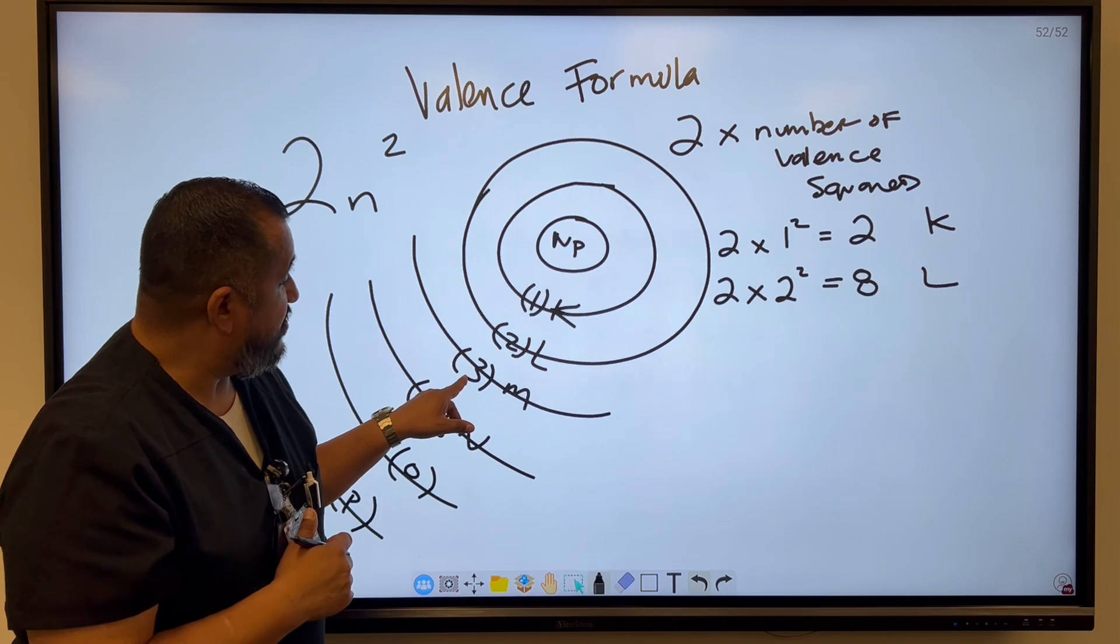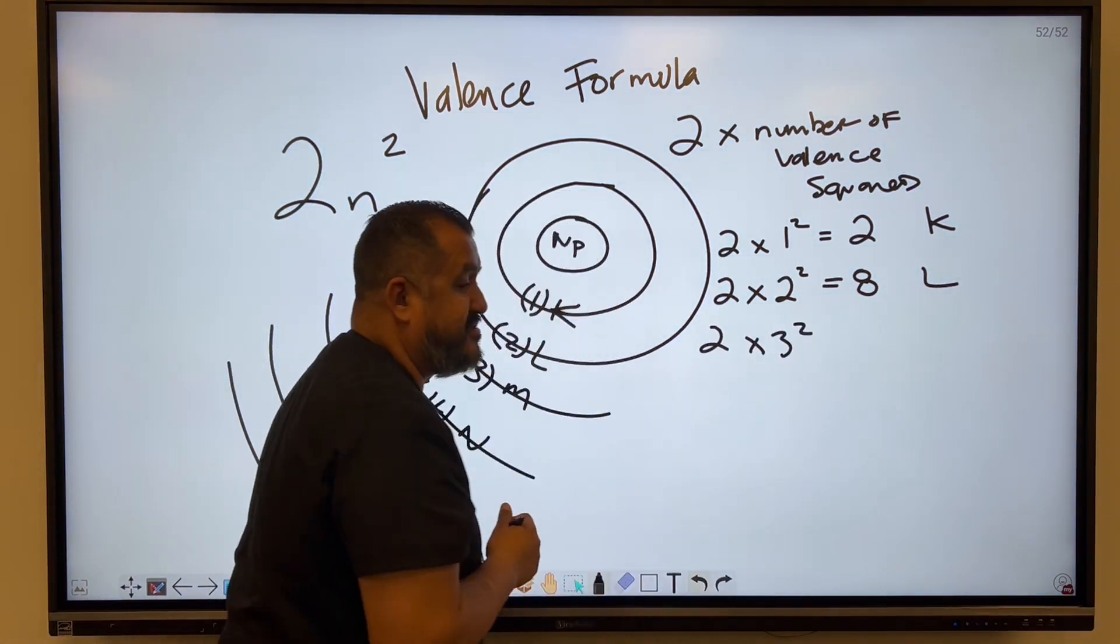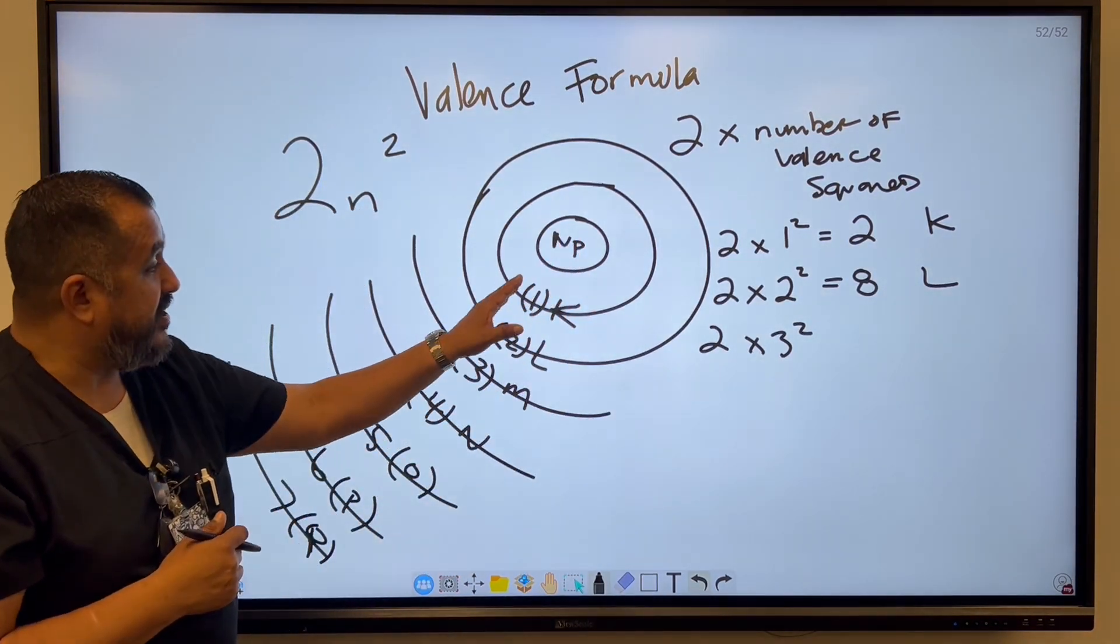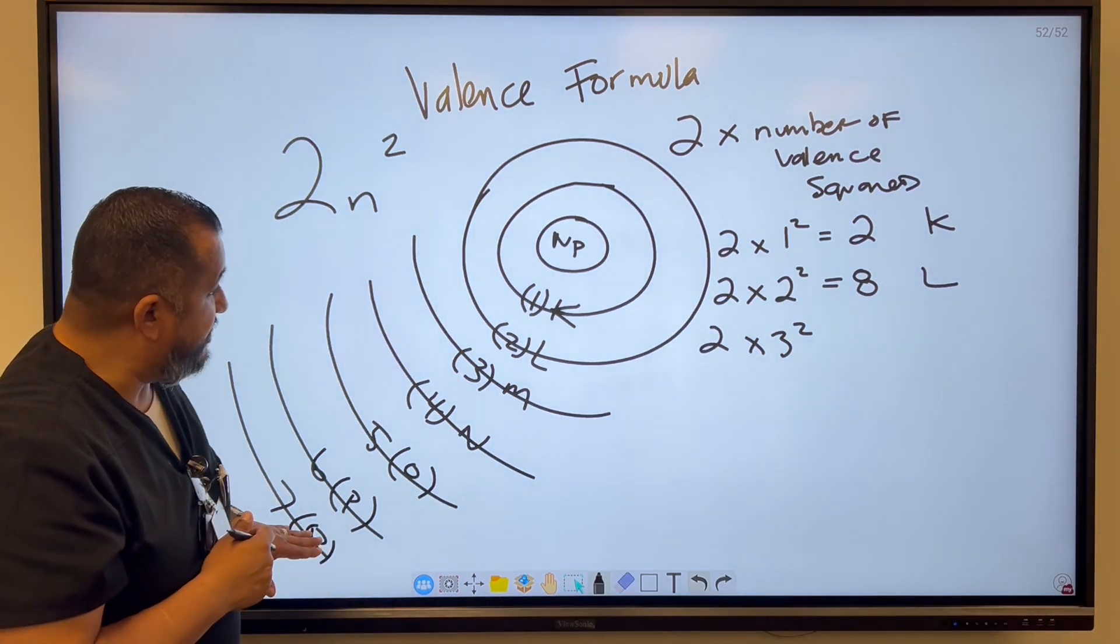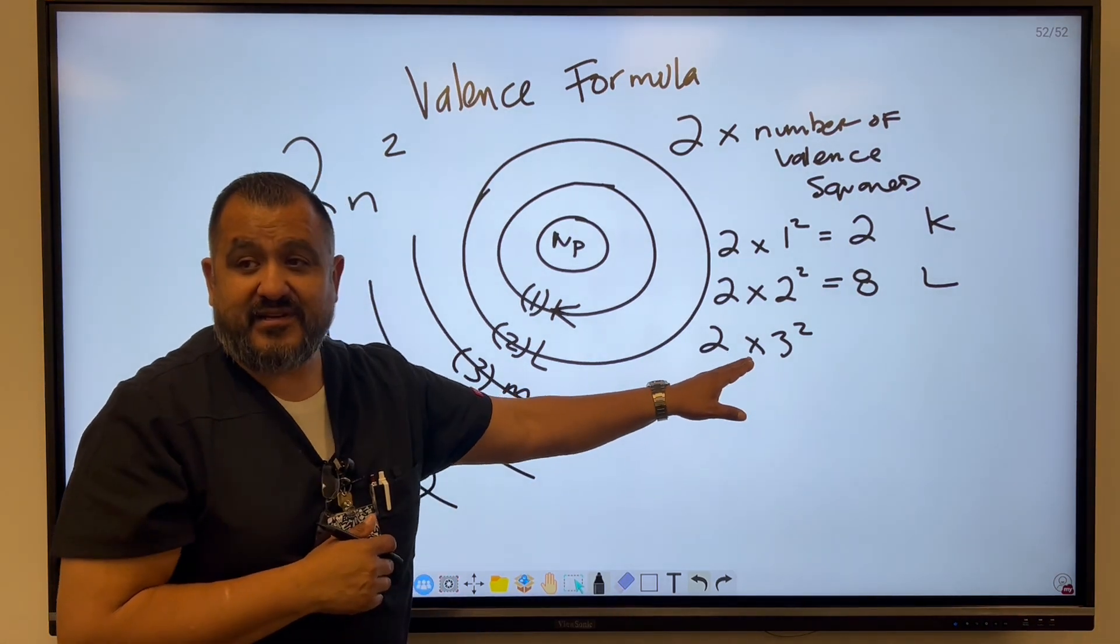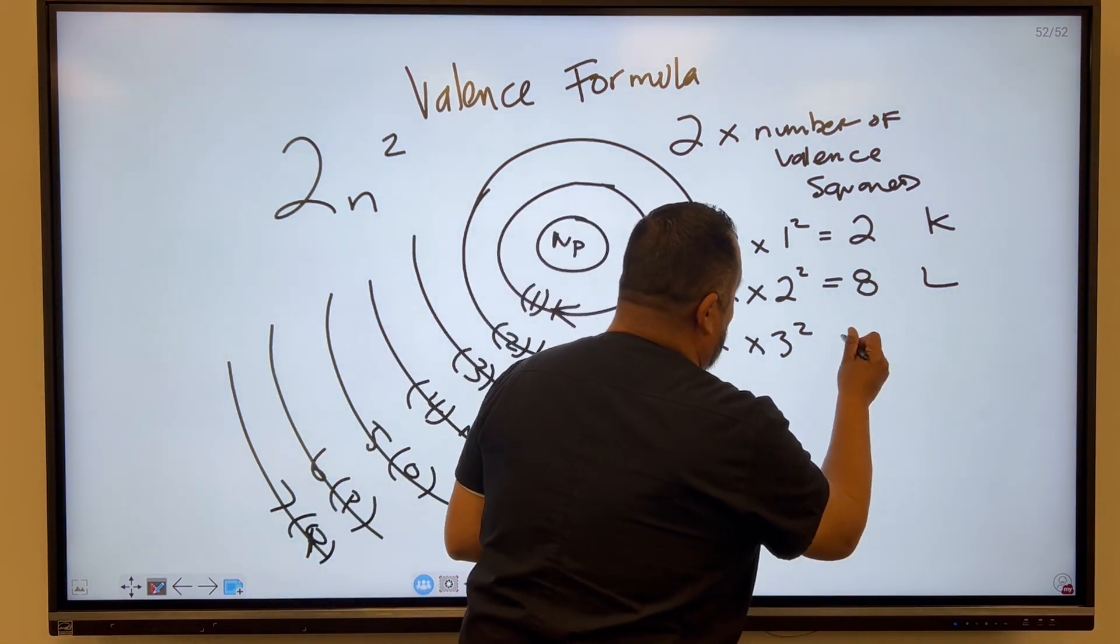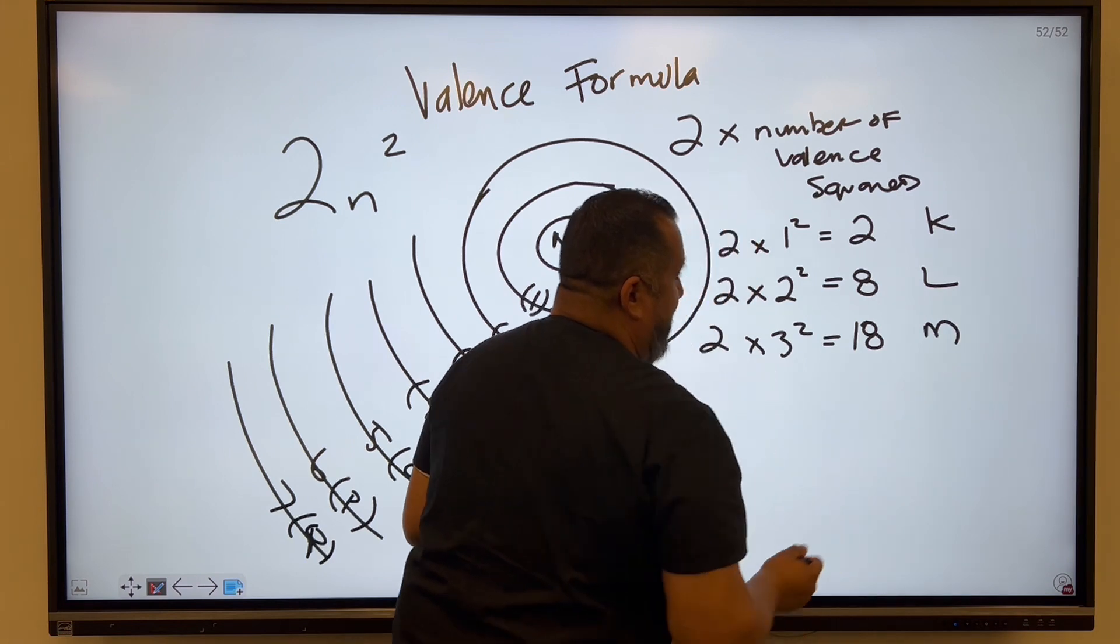Let's go to the third energy level. You're going to have 2 times 3 squared. Again, the number of the valence squared. If you just know K is the first one and 7 is Q, that's going to be the seventh one. You can just plug these numbers in. Don't make it overcomplicated. So 3 times 3 is 9. I'm not busting out my calculator for this one. So 9 times 2 is 18. And that's going to be M.